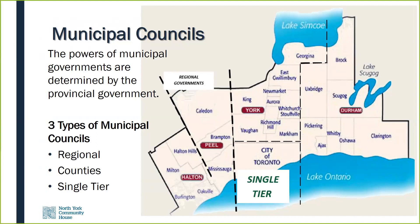Single tier municipalities exist across Ontario. They include municipalities that are geographically located within a county but are not a part of the county for municipal purposes. Single tier municipalities also include those former county or regional municipalities that have recently been amalgamated. Single tier municipalities have responsibilities for all local services to their residents. As you can see in the map, the City of Toronto is a single tier municipality.